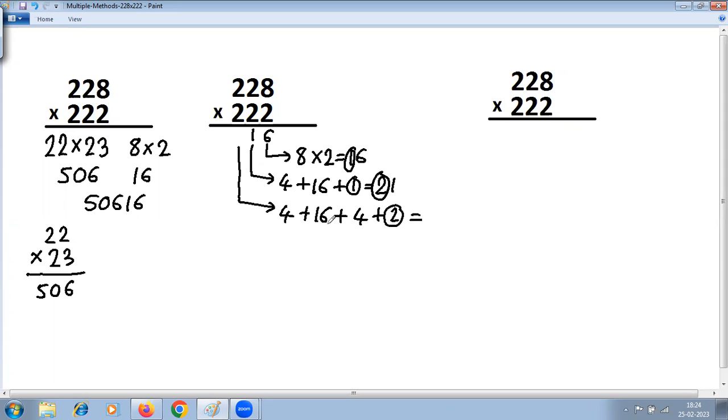So 4 plus 16 is 20, plus 4 is 24, plus 2 is 26. So write 6, carry 2. Next step: 2 into 2, that is 4, plus 2 into 2 again 4, plus there is a carry 2 in previous step.